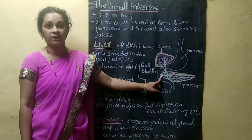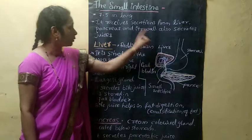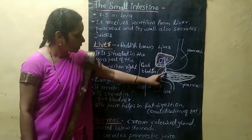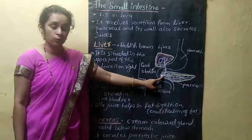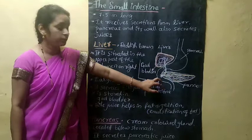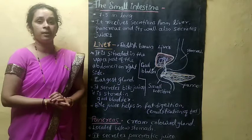The upper part of the small intestine is called the duodenum. Here the small intestine receives secretions from the liver, pancreas, and its wall. The liver secretes bile juice, the pancreas secretes pancreatic juice, and the intestinal wall also secretes juices. All these juices combine and act on different food molecules, converting them into simpler forms to help in digestion.